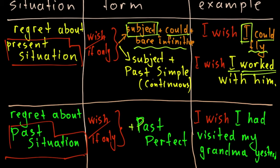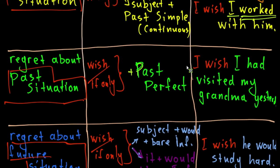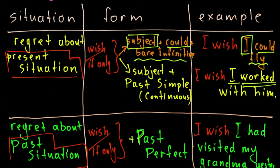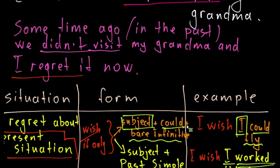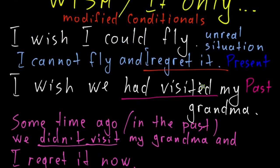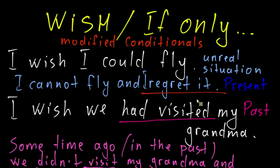As you can see, wish sentences and 'if only' sentences are a great tool to express regret and subjective opinions about real or unreal situations. They work very well in conversation and any discussion — very powerful instruments. That's all for now. Thanks for watching. Feel free to subscribe, like, dislike, or share. See you in the next video!